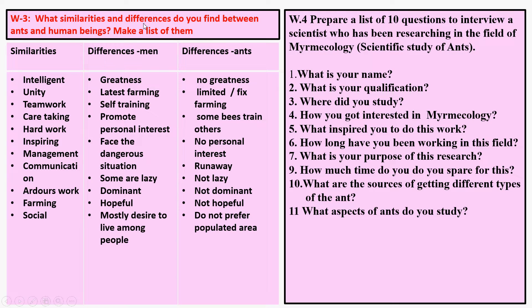You have to learn the words similarity and differences. Similarity means things done by both ants and human beings. Differences are things human beings do that ants do not, or do differently. Here you will develop two types of abilities: recalling words and analyzing.